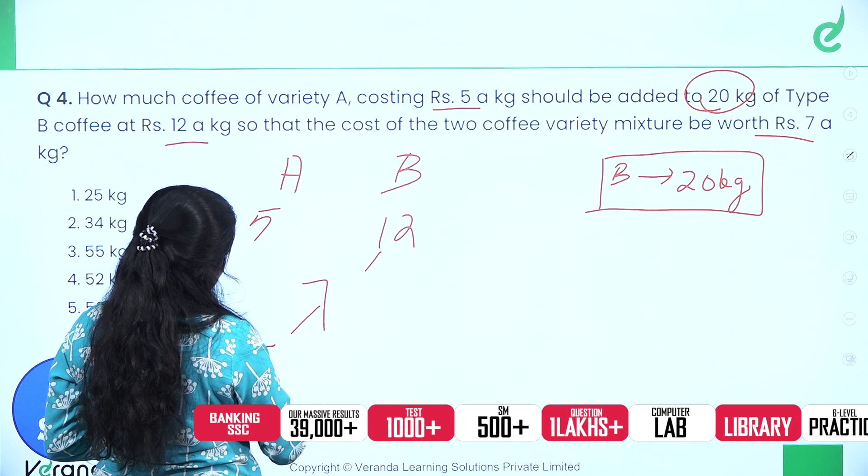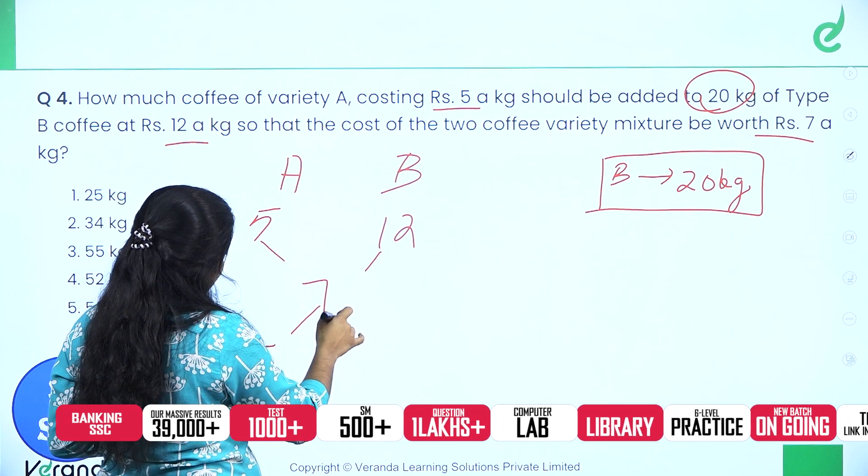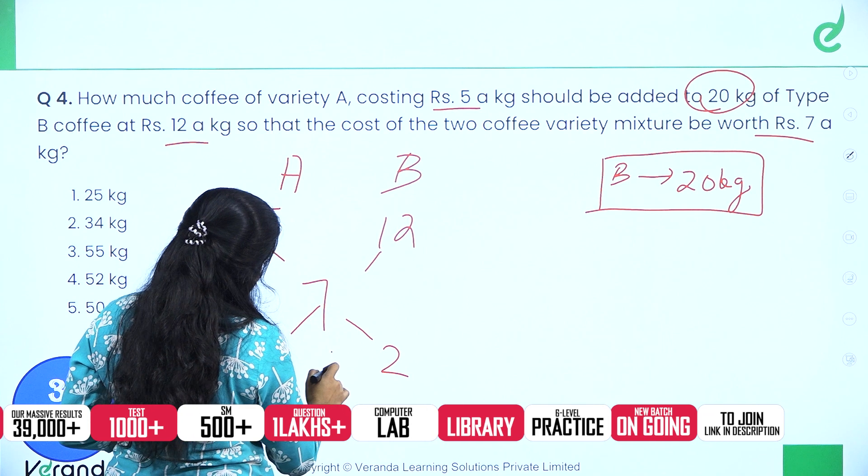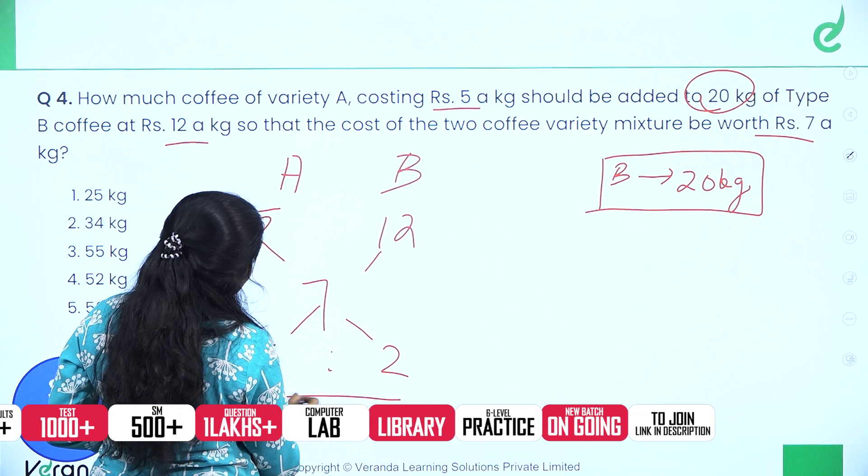Using alligation: 12 minus 7 equals 5, and 7 minus 5 equals 2. So the ratio of A to B is 5 is to 2.